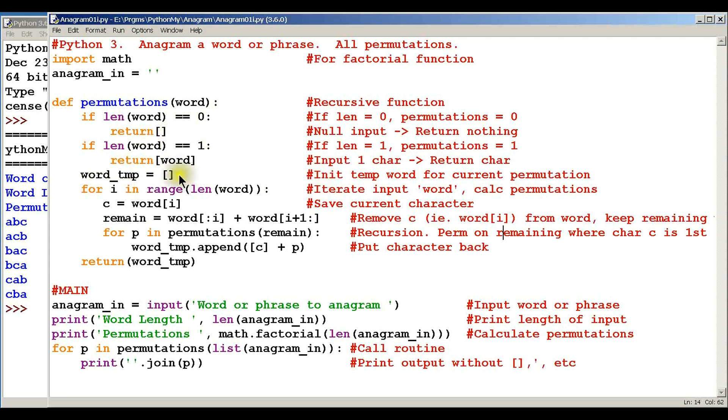We create a temporary workspace right here - that's this word_temp. And then we iterate the input word. So we're going to calculate the permutations, and we're going to walk through the word as many times as we need. We get the length of the word, and we're going to go from i to the length of the word. It should start at zero and go up to the length of the word.